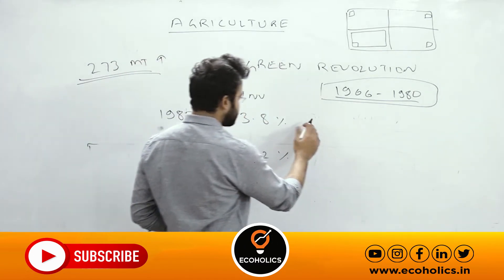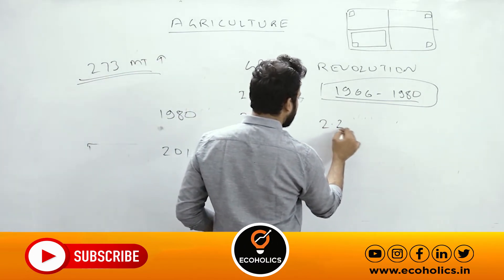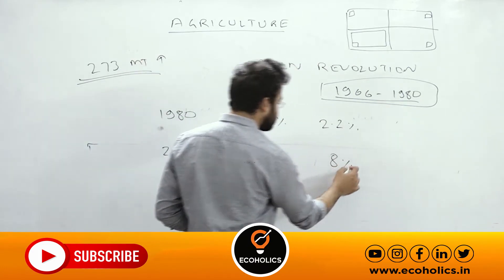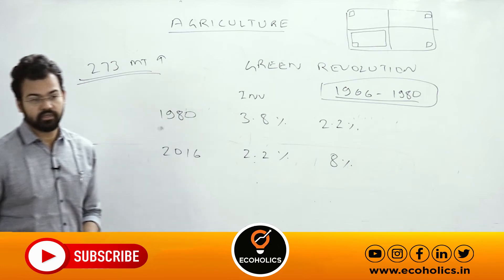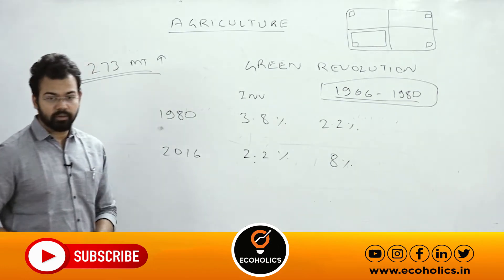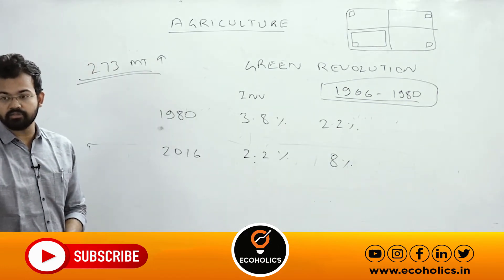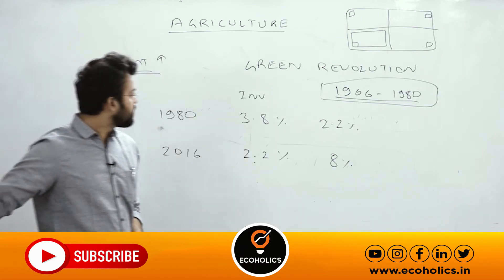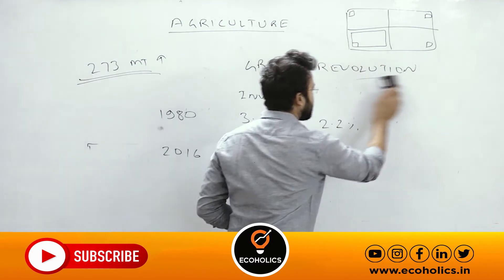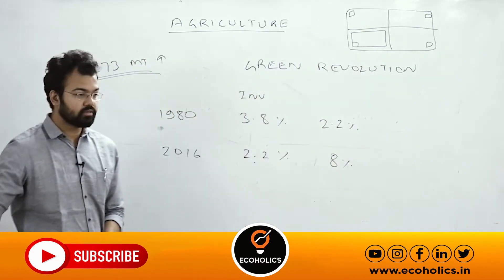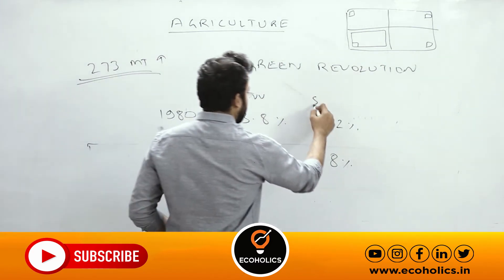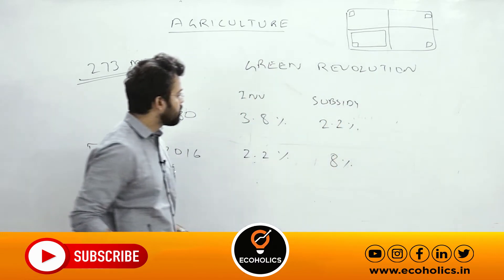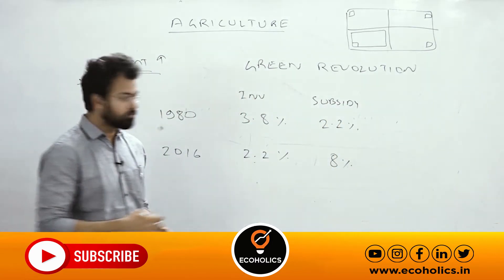On the other hand, if we compare subsidies, they were around 2.2% in 1980 and have seen significant growth since — you can see the difference between agriculture investment and agricultural subsidies. The data is published by the Ministry of Agriculture and Farmers. The investment is declining while public subsidies are rising.